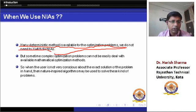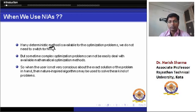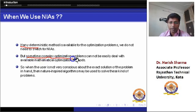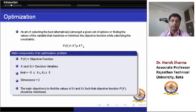Some researchers are applying nature-inspired algorithms even when deterministic approaches are already available for that kind of problem, so we should be more cautious about that. But in cases where complex optimization problems cannot be easily dealt with by available mathematical optimization methods, we apply NIAs — keeping in mind that NIAs give near-optimal solutions.